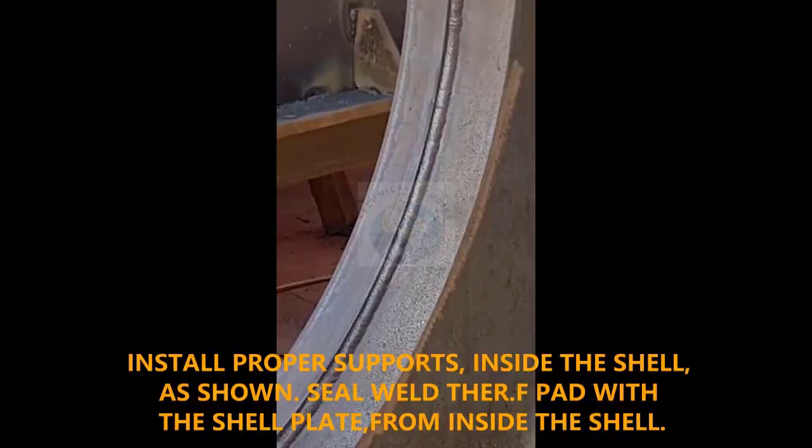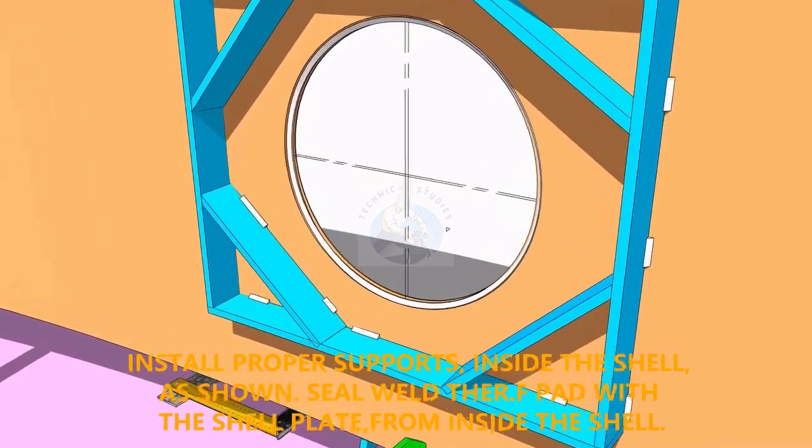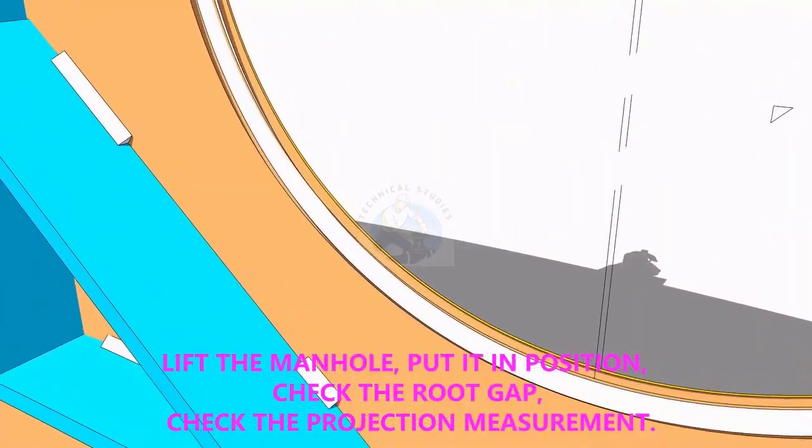Provide proper supports to control the distortion during welding. Weld a run on the joint between the shell plate and the pad plate.